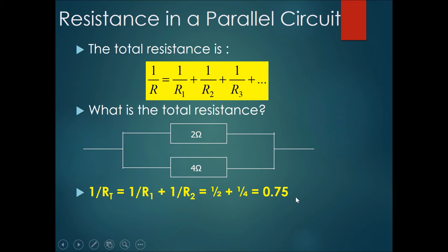Now a lot of people mistakenly stop here and think that the total resistance is 0.75 ohms. However, you have not solved the question yet because 1 over R total equals 0.75 ohms.